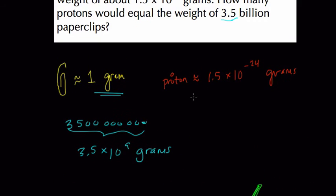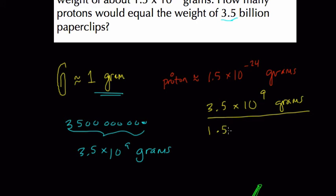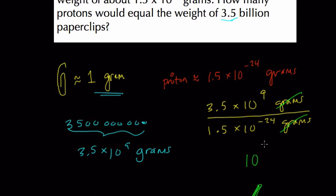Division will tell us how many protons go into this many grams. We set it up as: 3.5 times 10 to the 9th grams, divided by 1.5 times 10 to the negative 24th grams. Grams divided by grams cancel out. For 10 to the 9th divided by 10 to the negative 24th, same base, subtract the exponents: 9 minus negative 24 is really 9 plus 24, which gives us 10 to the 33rd power.